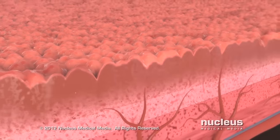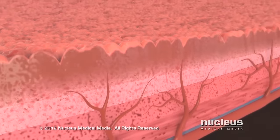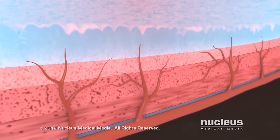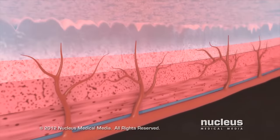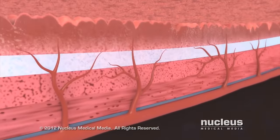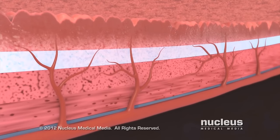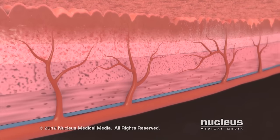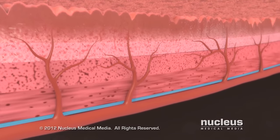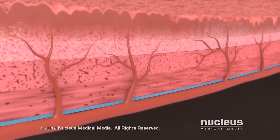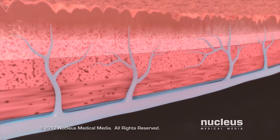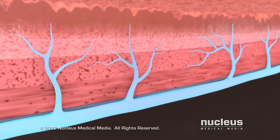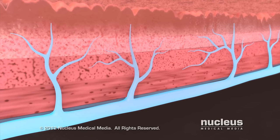The wall of your colon has four main layers: the mucosa, the submucosa, a muscular layer, and the outer serosa. Blood vessels, called vasa recta, supply blood to your colon.